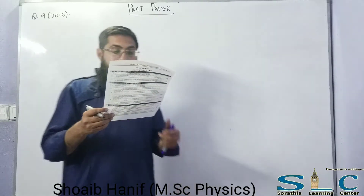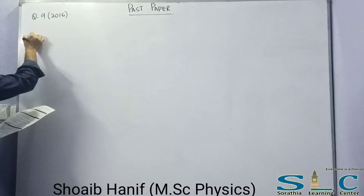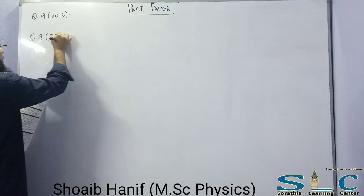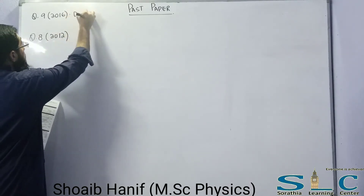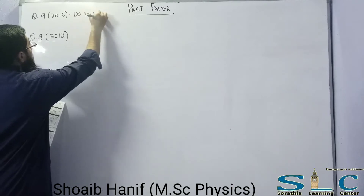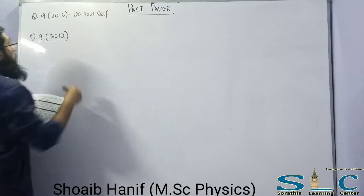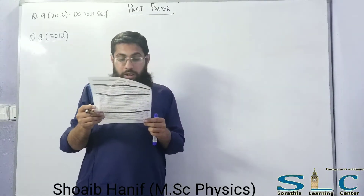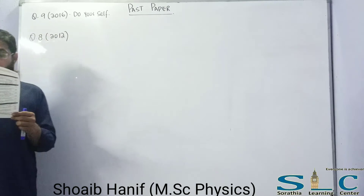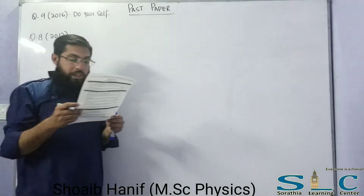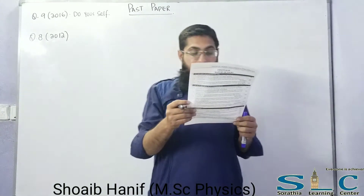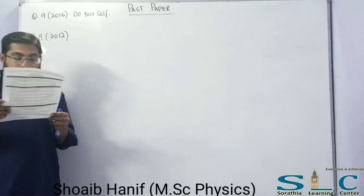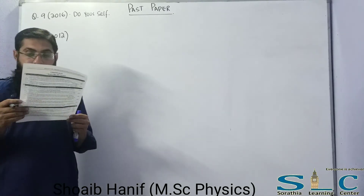Question number 8, which appeared in 2012: In a double slit experiment, 8 fringes occupy 2.62 mm on the screen, 145 mm away from the slit. The wavelength of light is 545 nanometer. Find the slit separation.